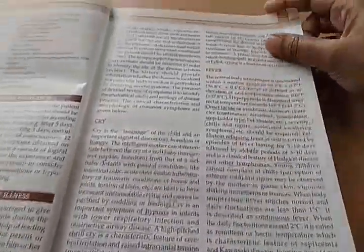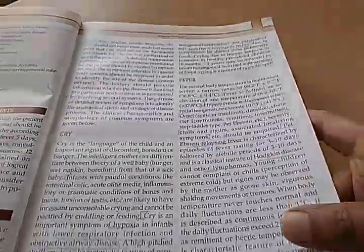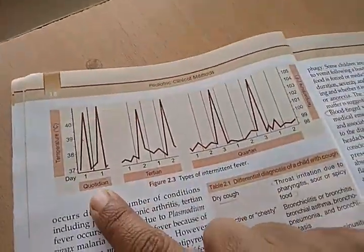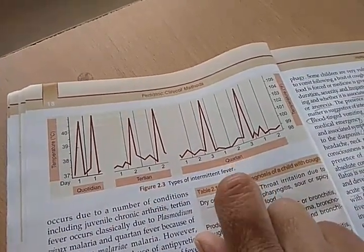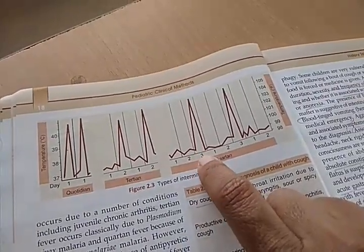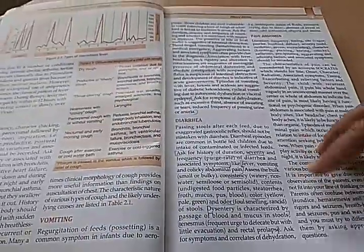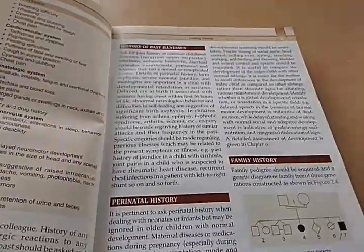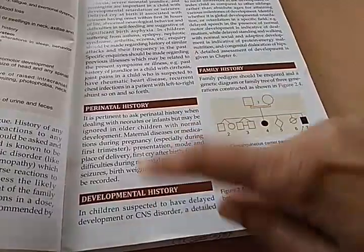They also discuss hoarse cry, excessive crying, and fever. There are three types of intermittent fever explained: intermittent, tertian, and quartan. Quartan means it occurs after a two-day gap, on the third day. Diarrhea is also discussed in the history of present illness.